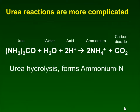Urea is somewhat more complicated. Urea goes through a process called hydrolysis — it gets combined with acid and water to form ammonium and carbon dioxide. So initially, hydrolysis uses up acid and pH goes up, but it forms ammonium which is acidic and pH goes down. So overall, urea tends to have an acidic net effect.